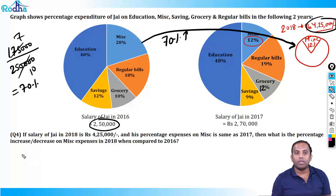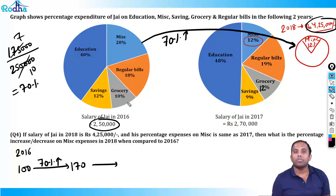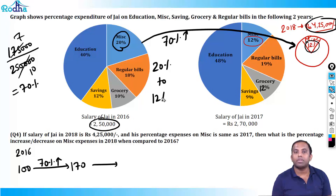From 100, pie chart value increased by 70%, so Jay's expenditure on miscellaneous should also increase by 70% if miscellaneous was constant. But miscellaneous here is 20% in 2016 and 12% in 2018. From 20% to 12%, what is the percentage decrease? 8 by 20 = 2 by 5 = 40%. So a further 40% decrease.